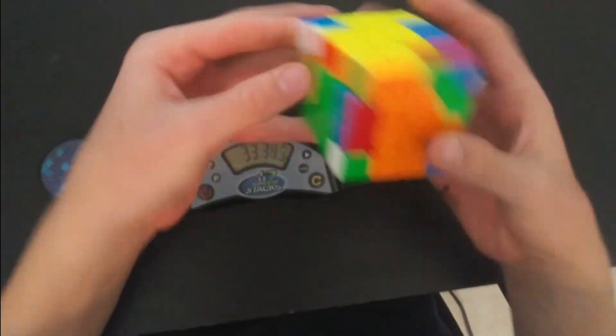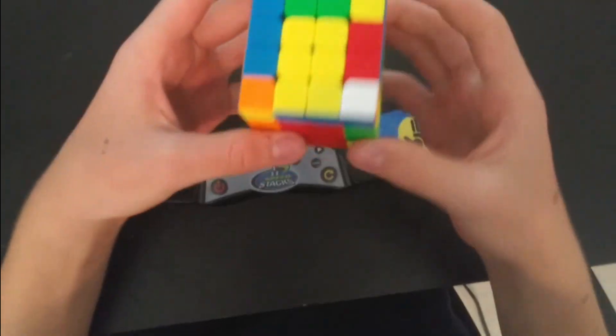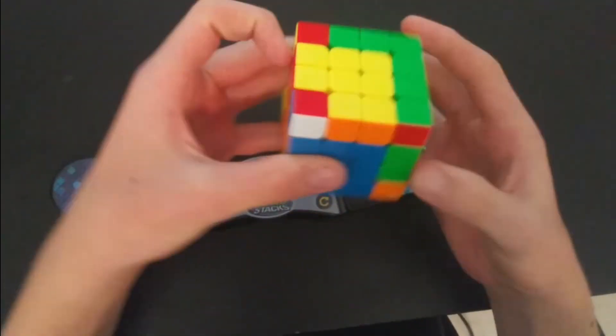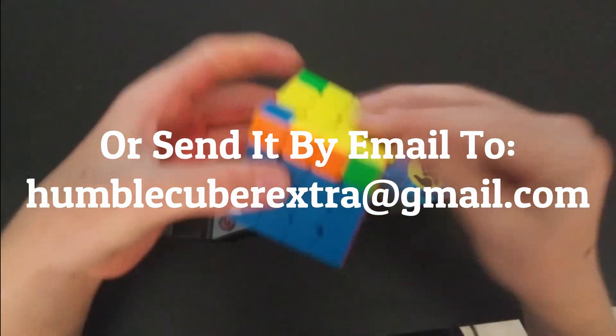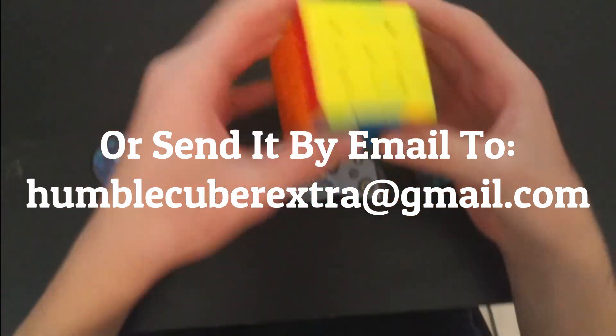Second announcement is how to earn shoutouts as well as enter the giveaway I'm currently running for the next two weeks. All you have to do to enter this giveaway and be guaranteed a shoutout in my upcoming videos, as well as be entered of course, is to use discount code Humble at the checkout on thecubicle.com. Once you do that, take a screenshot of it and send it to Humblecuber on the speed solving forums.